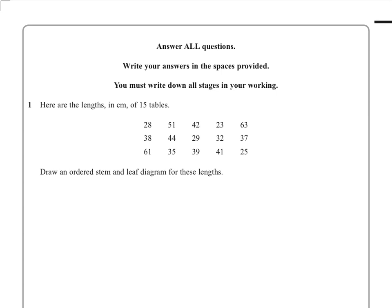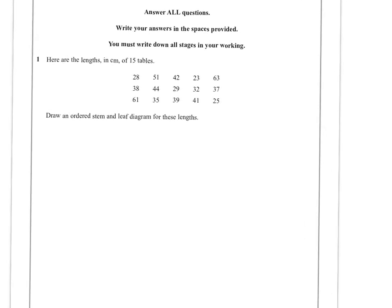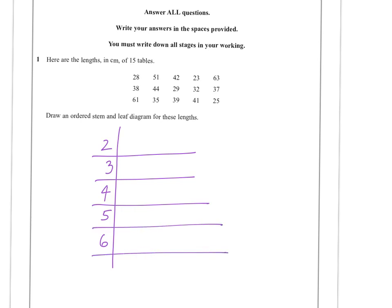Question one, we've got to draw an ordered stem and leaf diagram for the information given, so let's do the stems first. So we'll have two, three, four, five and six. You don't have to be too neat with this, you just got to get it so it's easily read.